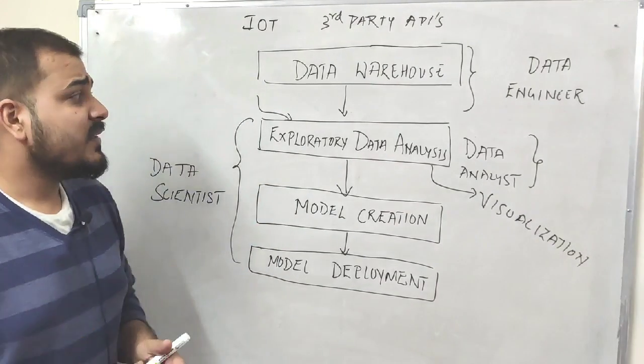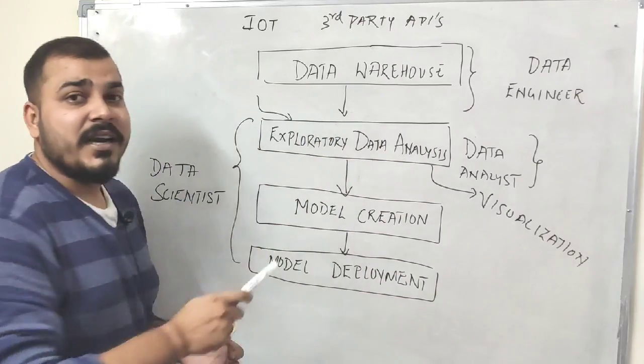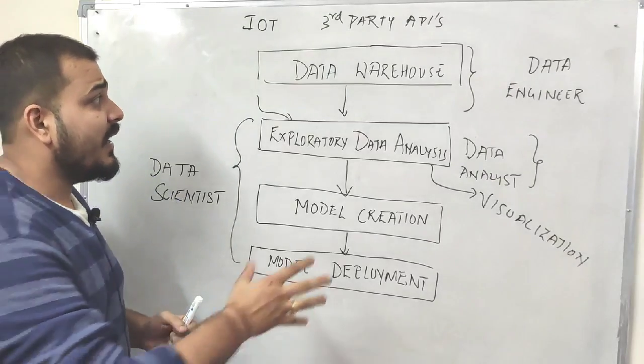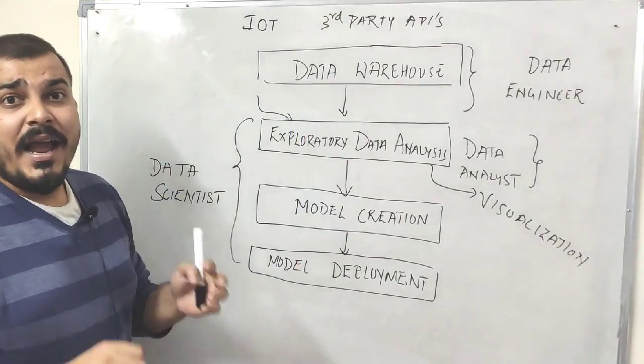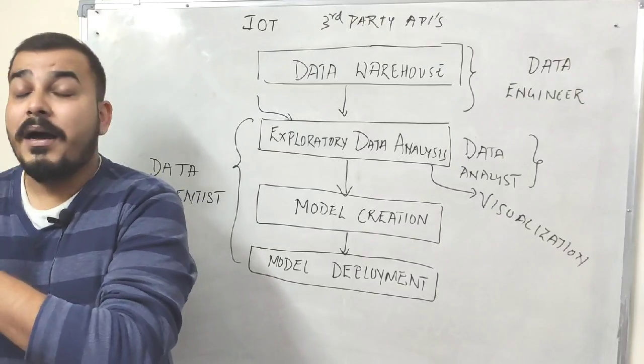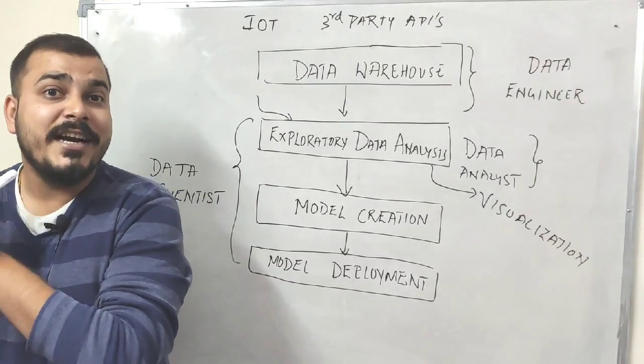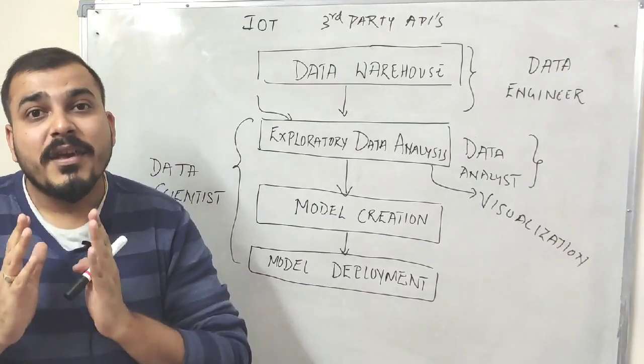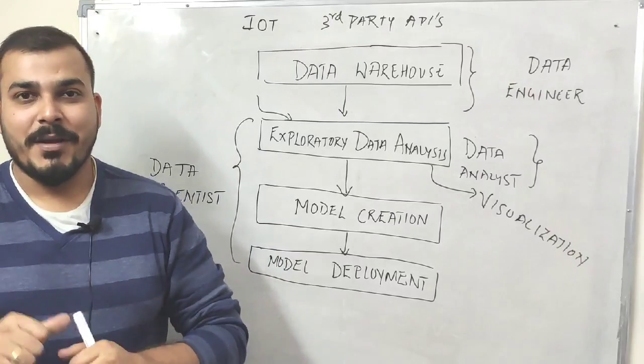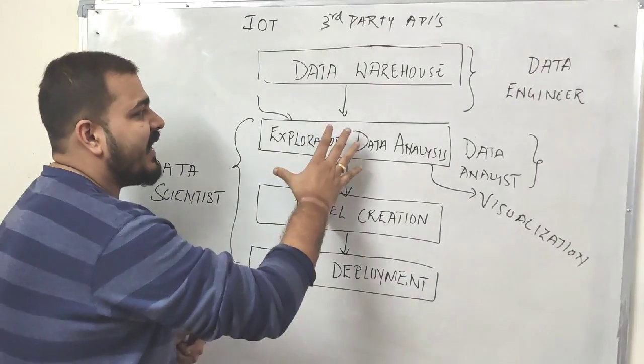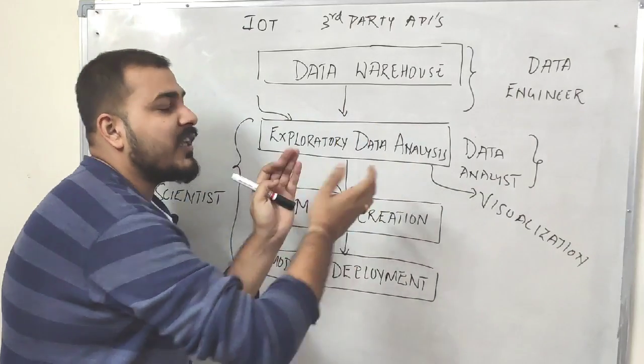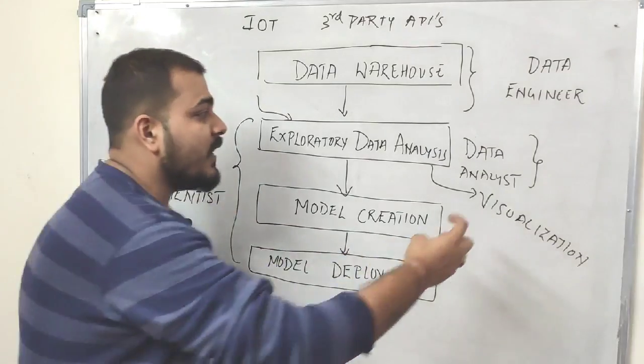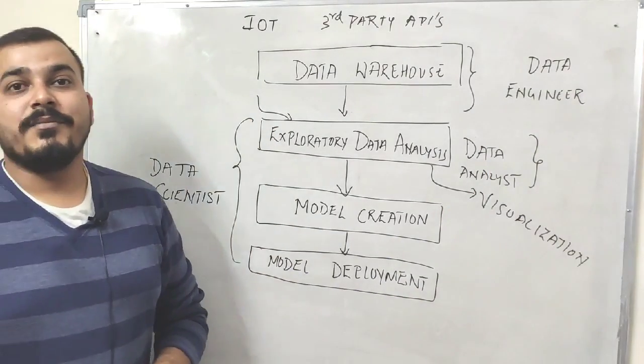In the next step, we have to use this data. If I'm considering a data science lifecycle or project, I have to take this particular data and complete all my pipelines involved in the data science lifecycle. These pipelines may be feature engineering, feature selection, model creation, and many more. Next I'll take this data and perform exploratory data analysis.